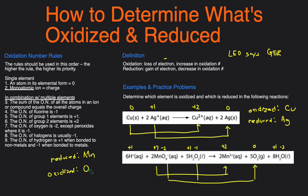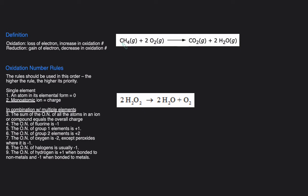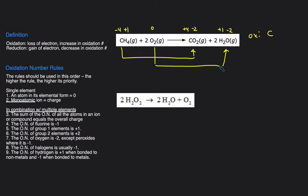Let's take a look at two more examples. For the next one: C — we don't have a direct rule for C, but H is positive one, so that's positive four total, which means C has to be negative four. O2 is zero. Then on the product side, O is negative two, so that's negative four, and carbon is positive four. H2O: H is positive one, O is negative two. So the carbon goes from negative four to positive four — that means carbon was oxidized because it had an increase in oxidation number. H stays at positive one throughout, so H is neither oxidized nor reduced. And then O goes from zero to negative two, so oxygen is the element that's reduced.